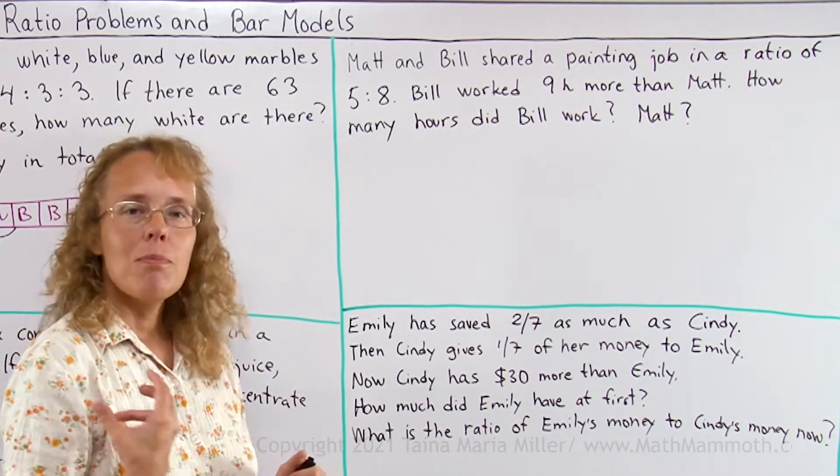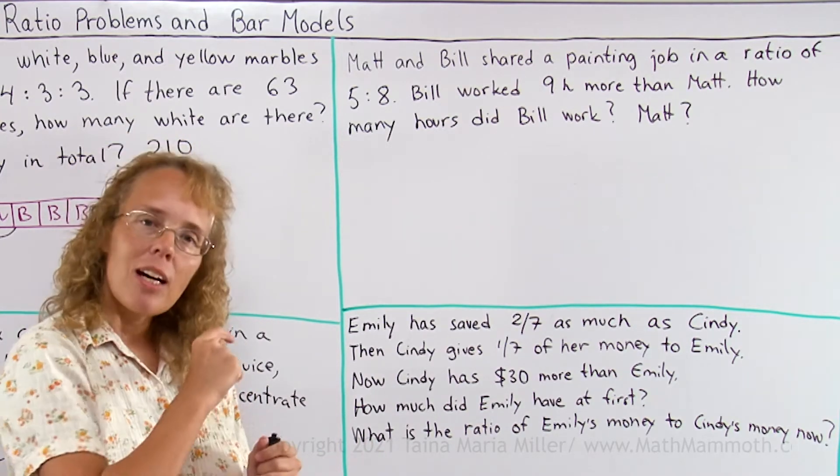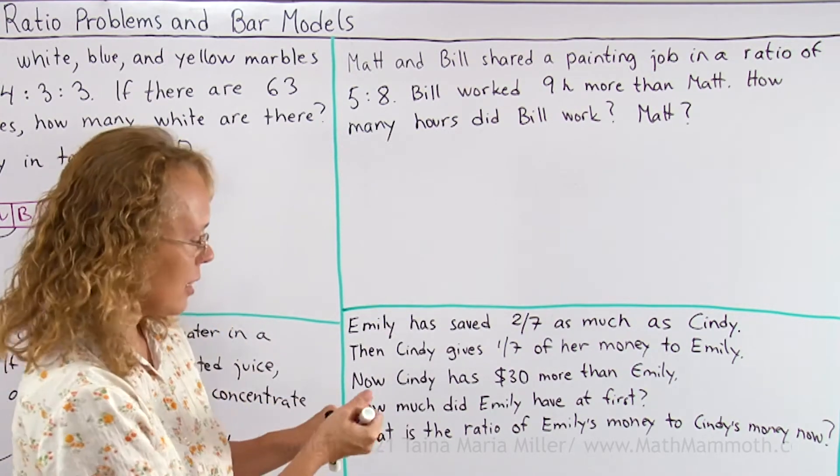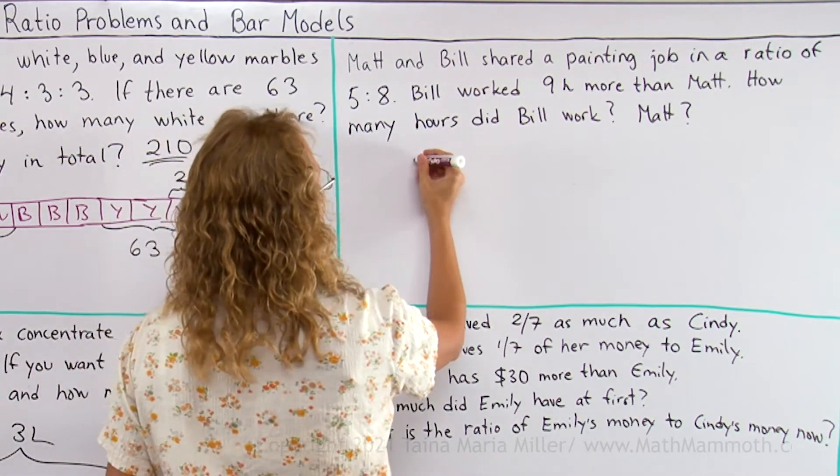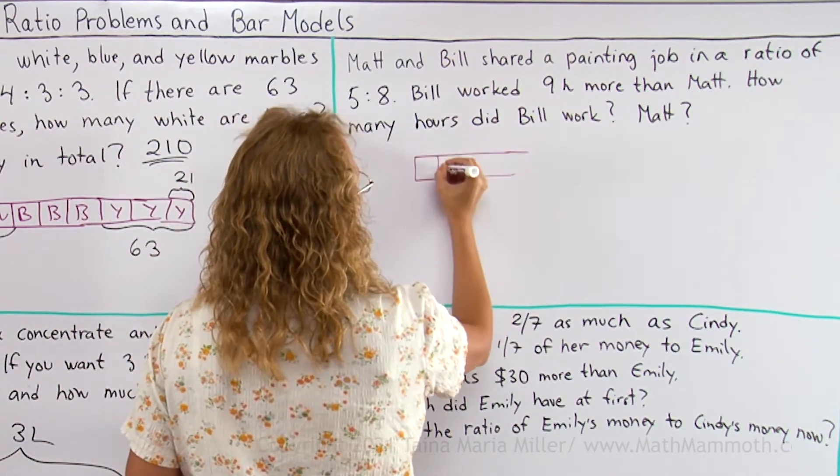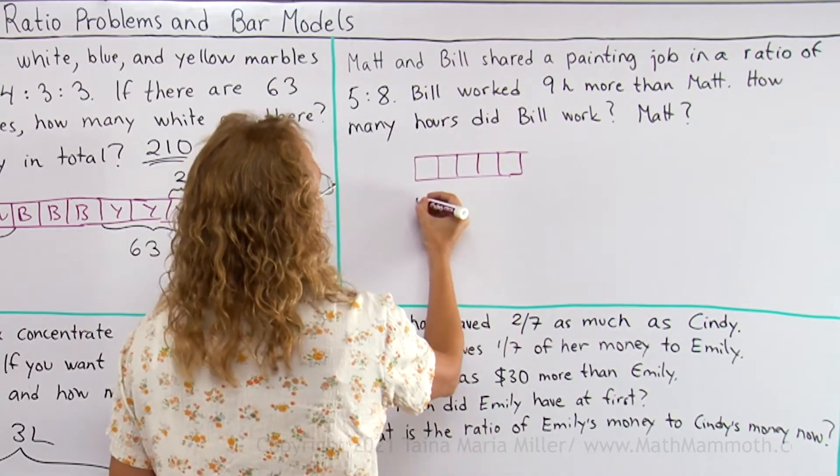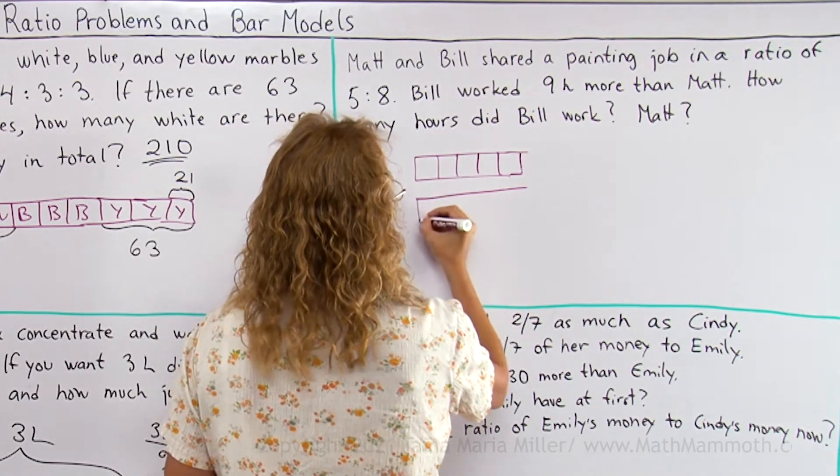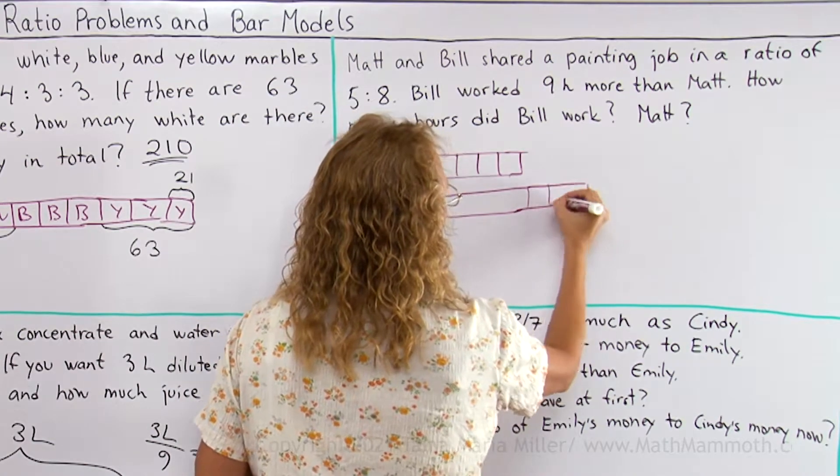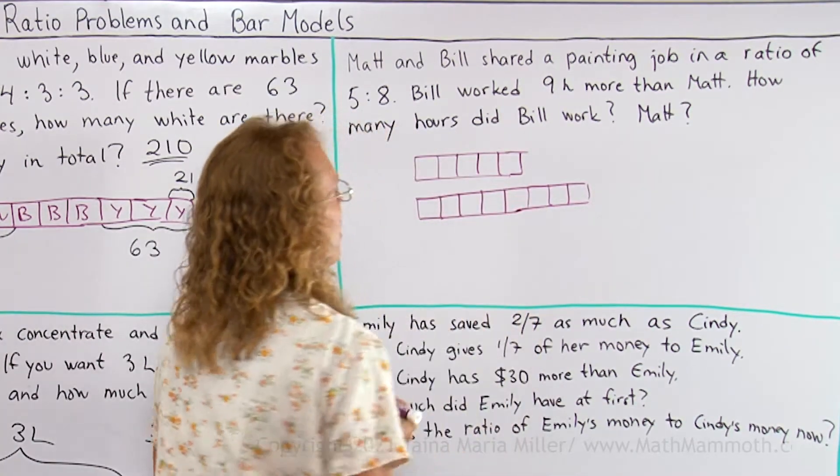I'm gonna draw a model again, but this time I'm gonna have a different bar for Matt and different for Bill, like this. Matt's would be 5 parts, like that. And then Bill's would be 8 parts, so it's longer, there.